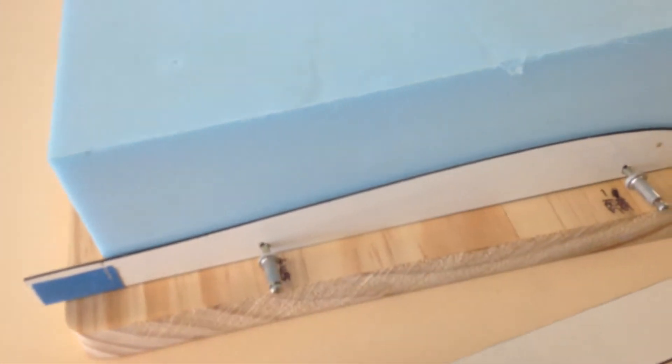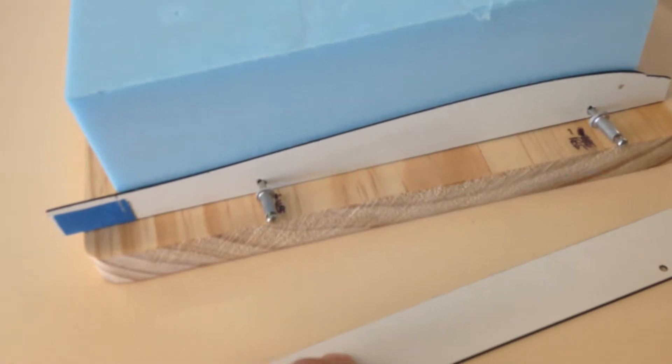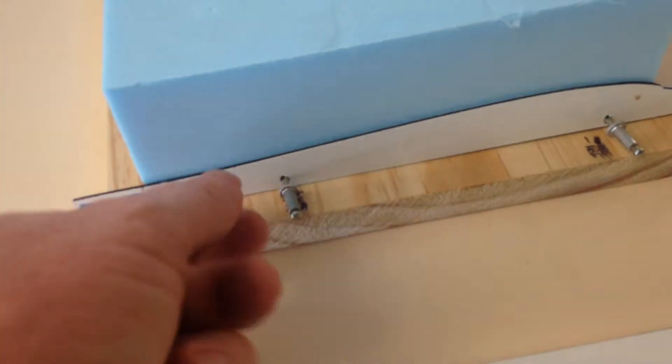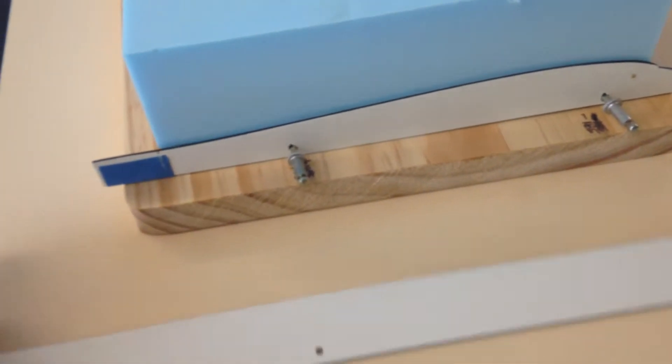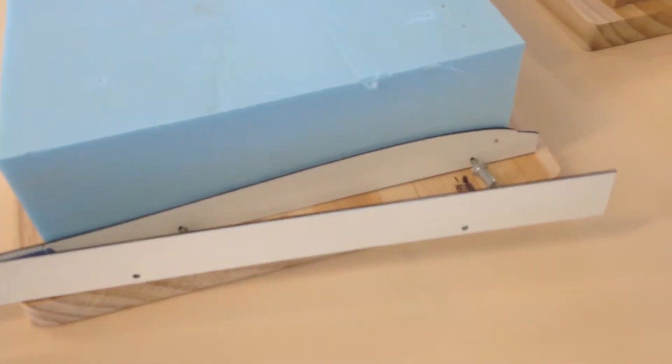What do you call those things? Pop rivets. So you just take them out, swap the template over to the height cutting template, if you like, for want of a better word. And then it docks it off at whatever height that is.